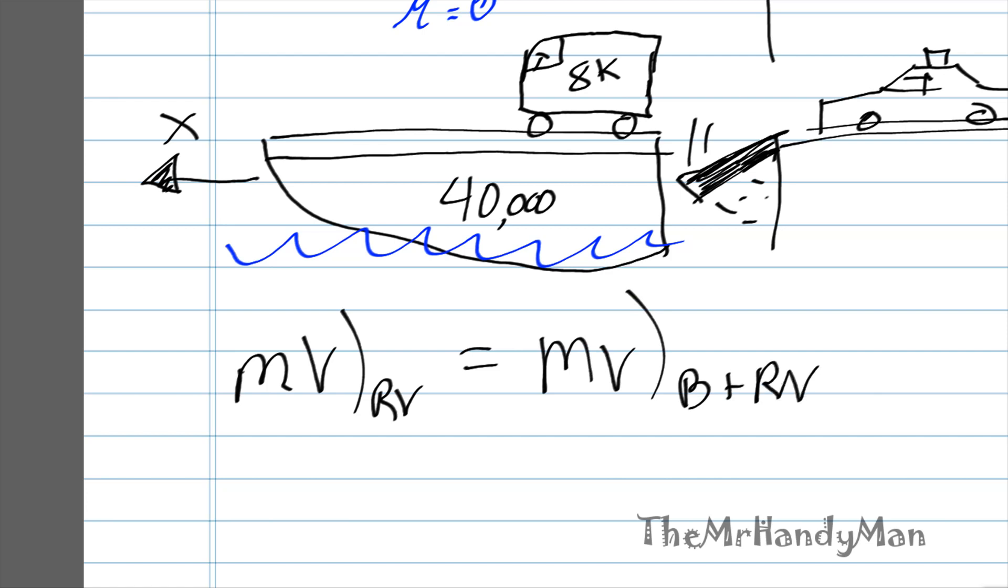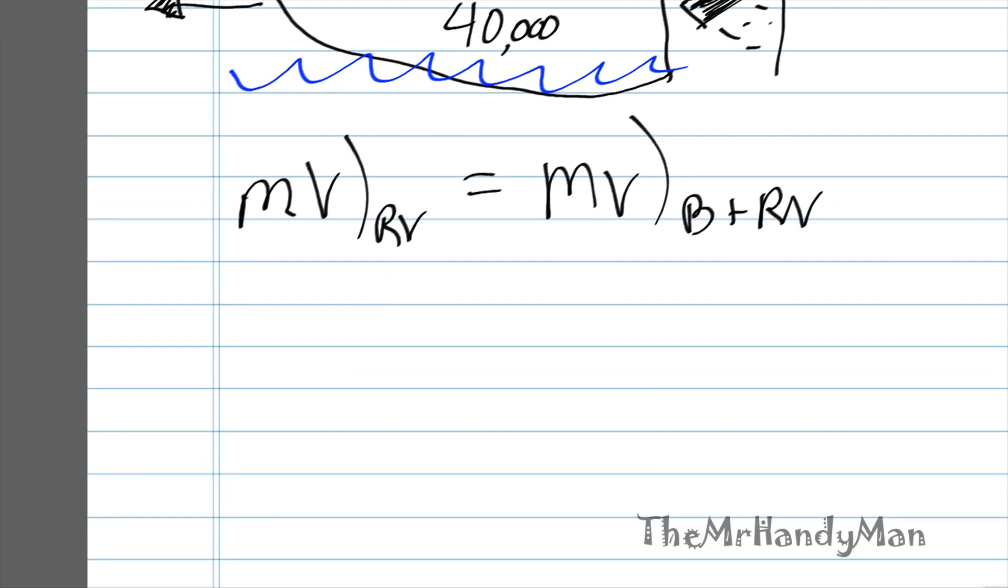So you can literally, I mean, just a simple calculation of RV mass 8,000 pounds going 40 miles per hour, and that will convert itself into the boat and RV's mass, which is 48,000, and the x is the speed.